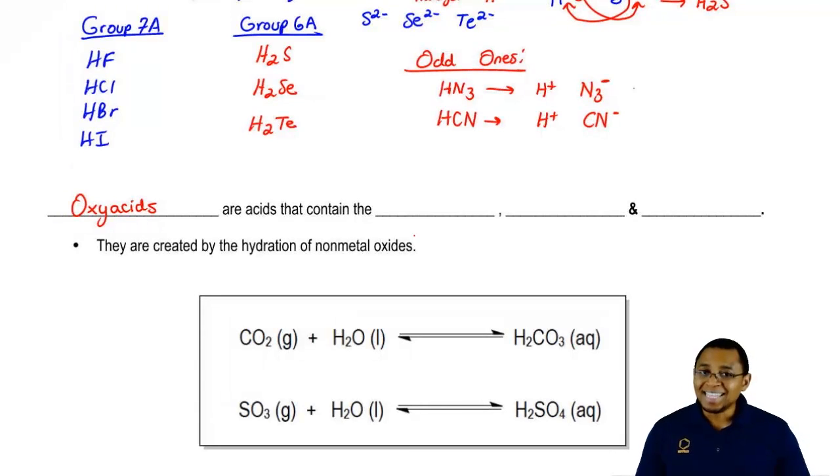Oxyacids are acids that contain the H+ ion, of course. They contain oxygen and some type of non-metal.